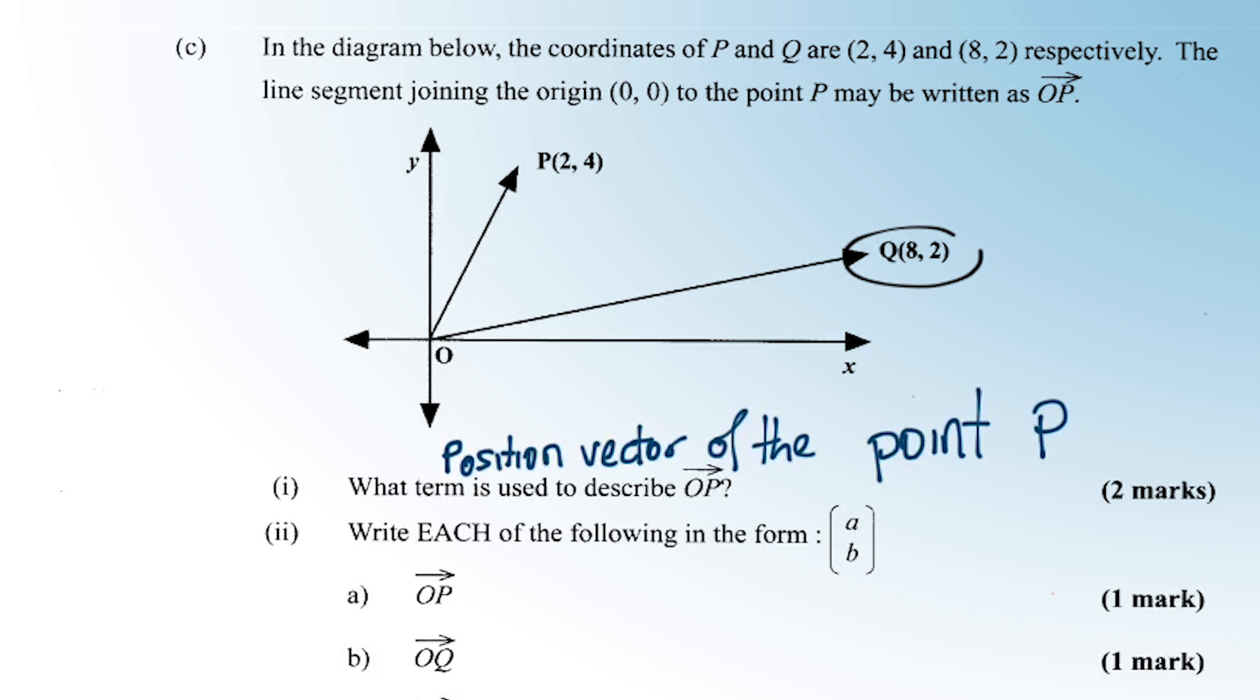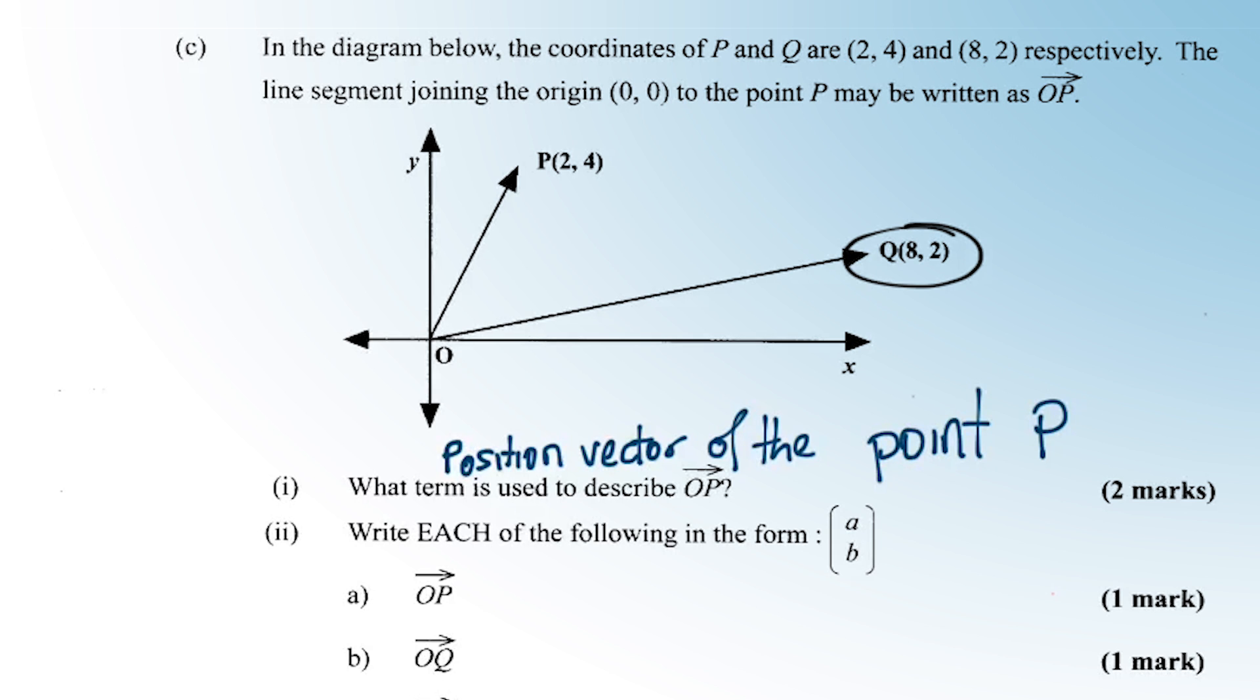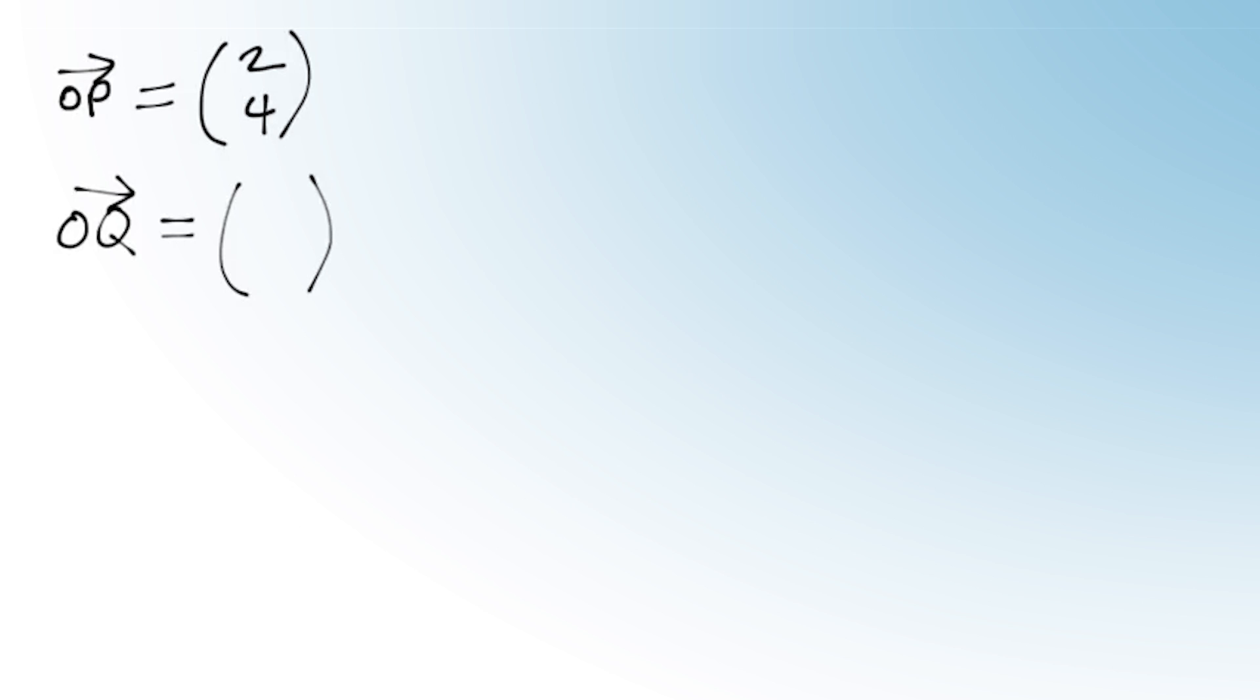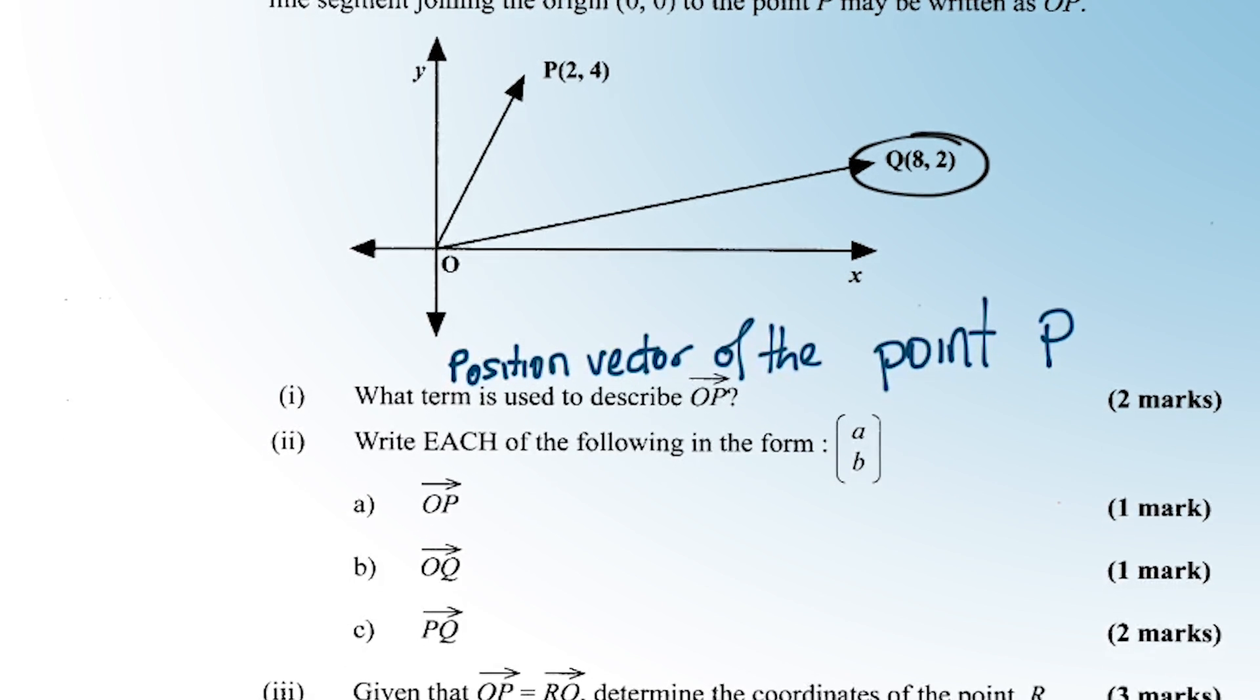OQ. OQ is here, so we're looking at Q. We're doing position vectors when it's O something, right? To get that position vector, we just need to simply flip around the coordinates. What are the coordinates of Q again? (8, 2). So I've got 8 here and 2 there because the top is the X and the bottom is the Y.